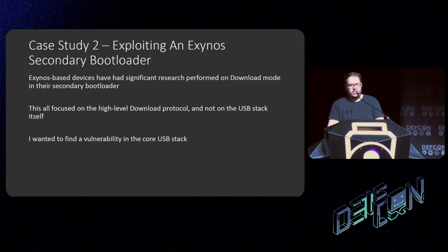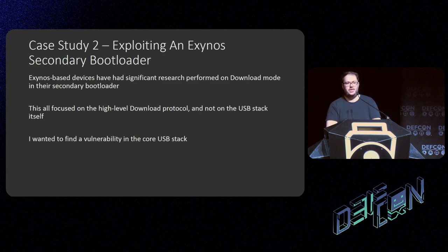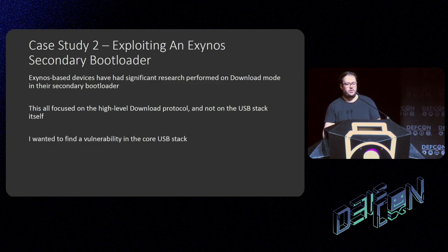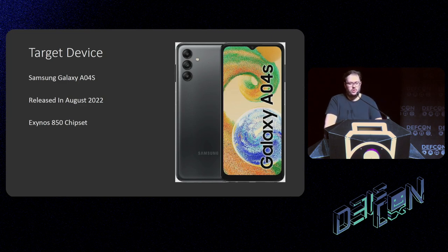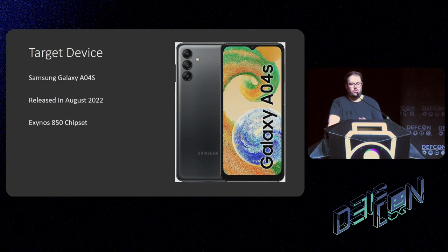Now the second case study — a bit more technical and exciting because I'm not going for a device I wanted to root, but just wanted to exploit in some way. Exynos-based devices have had significant research done on them at this stage and at Black Hat in previous years, but they all focused on the download mode of the bootloader — the high-level protocol used by Samsung to write and read files and debug the device. I decided to start a project to manipulate the low-level USB stack in use to see if I could find a vulnerability as actionable as what had already been found.